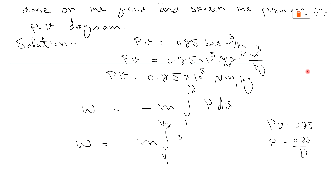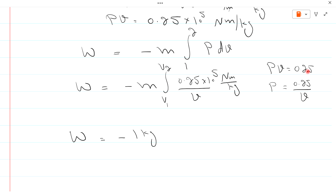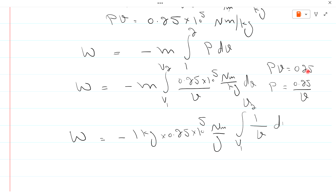Substituting, P = 0.25 × 10⁵ N·m/kg divided by v. So W = minus m, where m = 1 kg, times the constant 0.25 × 10⁵ N·m/kg, times the integral from v1 to v2 of (1/v) dv.